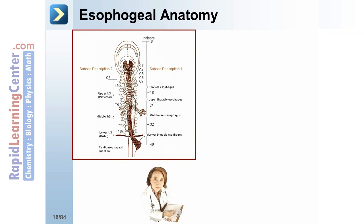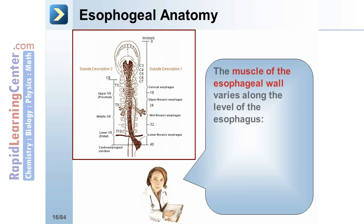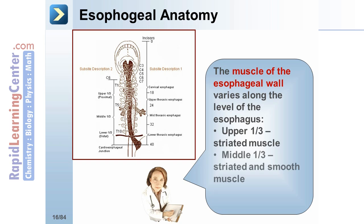The muscle of the esophageal wall varies along the level of the esophagus. The upper one-third is striated muscle, the middle one-third is striated and smooth muscle, and the lower one-third is comprised of smooth muscle.